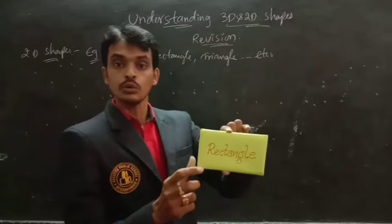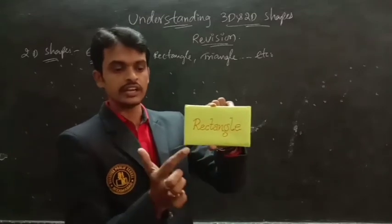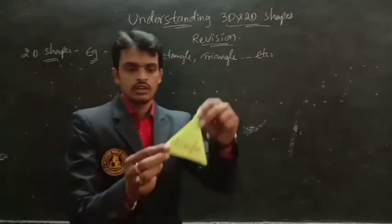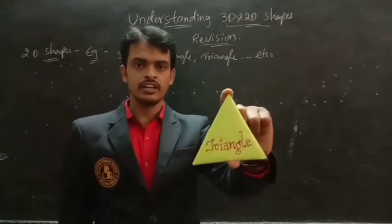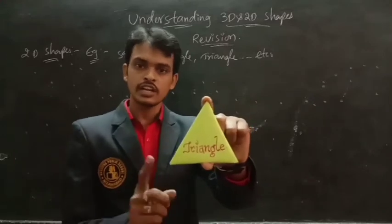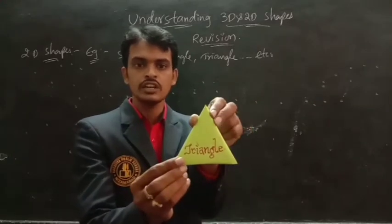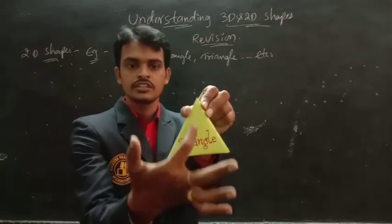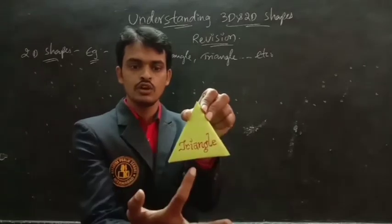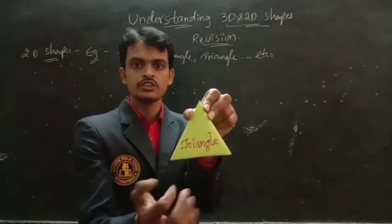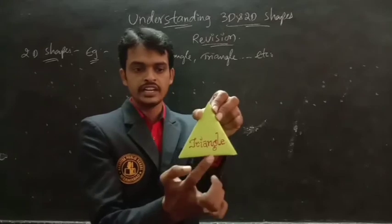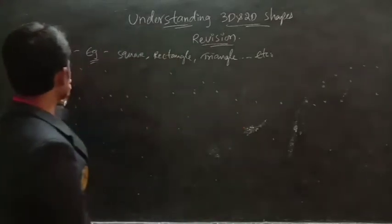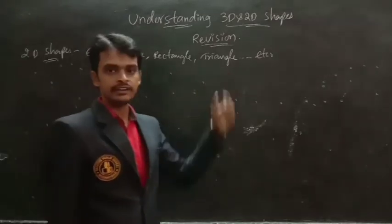The two dimensions of a rectangle are length and breadth. Now, triangle is also a 2D shape. The two dimensions are base and height. The perpendicular line segment joining from the vertex to its opposite side is called height, and the other dimension is the base. So square, rectangle, and triangle are examples of 2D shapes.